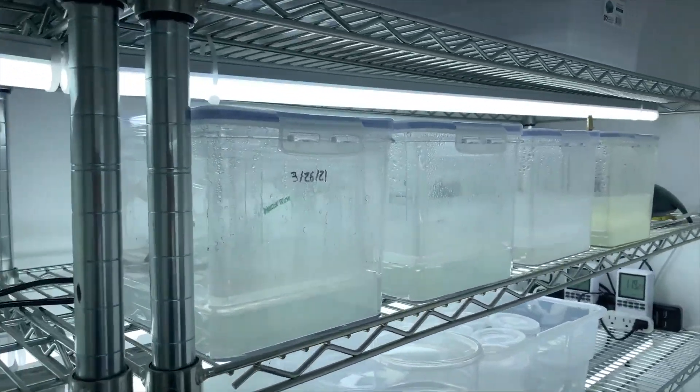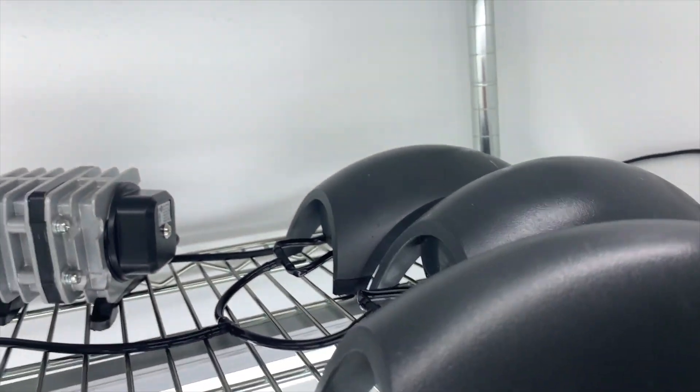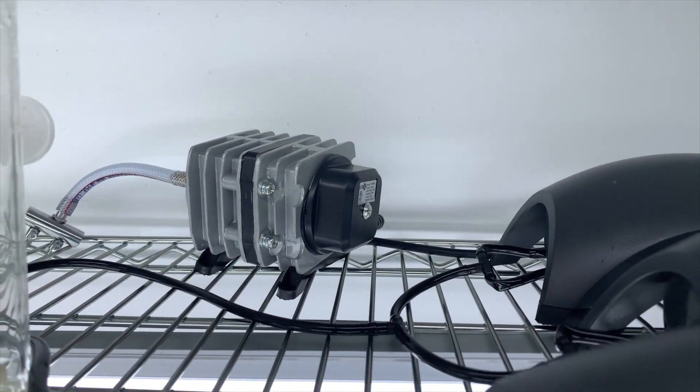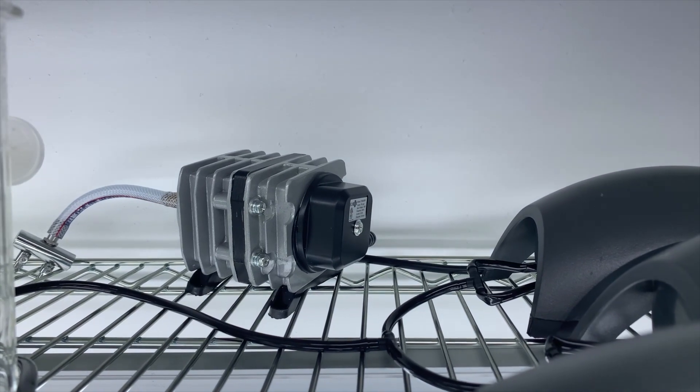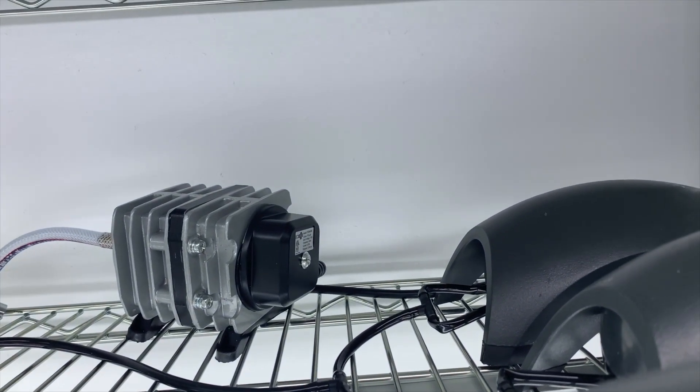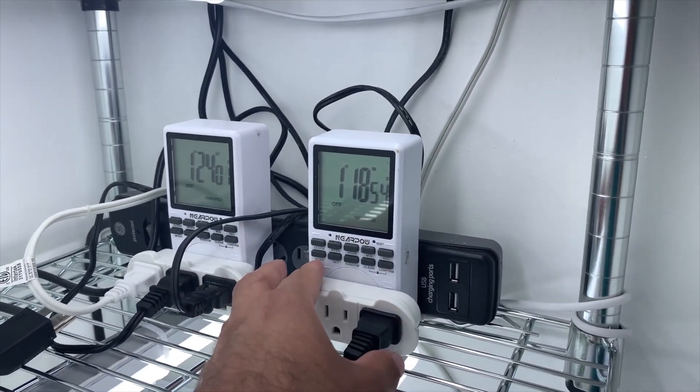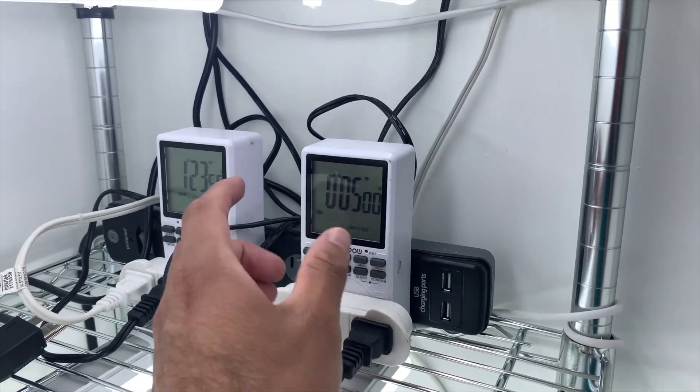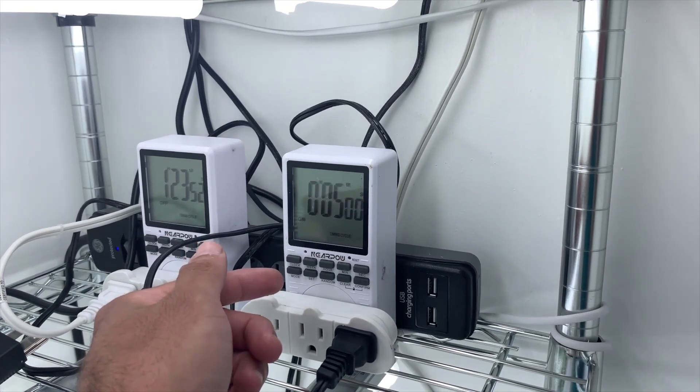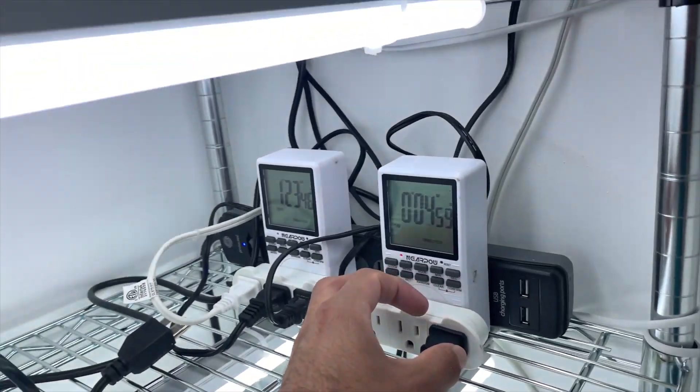Let me explain how the temporary immersion bioreactors work. They use three aquarium pumps, ignore that one over there, that is going to be for the new temporary immersion bioreactors, the homemade version. They use a solenoid and two timers. So the way it works is let me set up the timer. I have it set for five minutes every six hours.